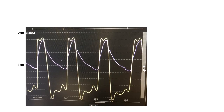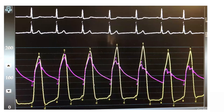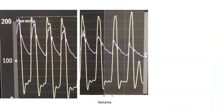Here is another case. There is no gradient at rest or minimal gradient between the LV and the aorta. Then we performed Valsalva, and after Valsalva we created a nice gradient between the LV and aorta with a spike and dome morphology. Those are the maneuvers we commonly perform in the cath lab — watching what happens spontaneously, doing Valsalva, and inducing PVCs with our catheter to see whether the Brockenbrough phenomenon happens.